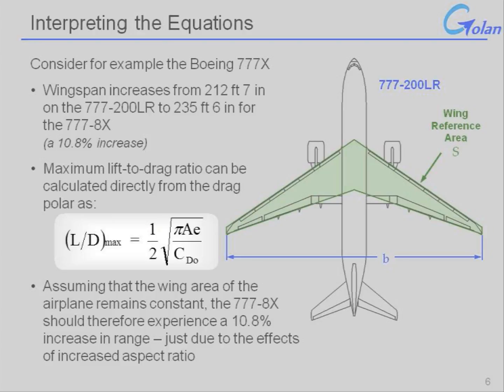What this means in practice for the 777 is that increasing the wingspan by 11% also increases the aspect ratio. Remembering that the aspect ratio is equal to the wingspan squared divided by the wing area. Now, assuming that the wing area for the two versions of the 777 remains constant, as a first order of approximation, we would conclude that an 11% increase in the wingspan will be related directly back to an 11% increase in the range of the aircraft.